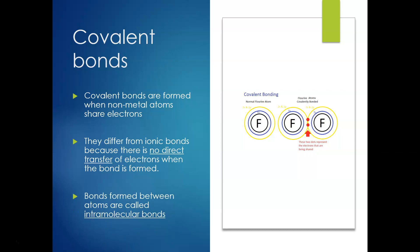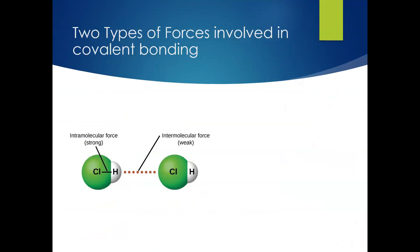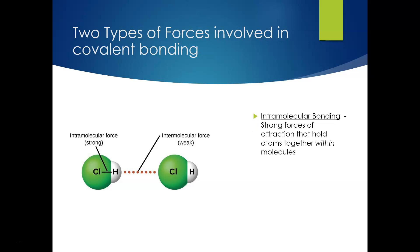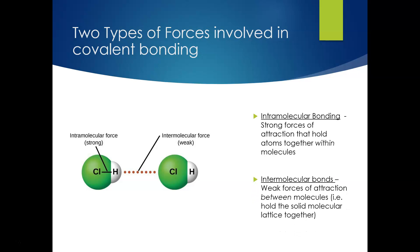Bonds are formed between atoms and we call these intramolecular bonds. We've got two different bond types: intramolecular bonds and intermolecular bonds. The intramolecular bond, for example between chlorine and hydrogen, is really strong — it makes that molecule very strong and it's hard to break apart. Whereas bonds between molecules are weaker. So intramolecular bonds are strong and hold the molecule together; intermolecular bonds are weak, more of an attraction, and they hold a solid molecule lattice together.